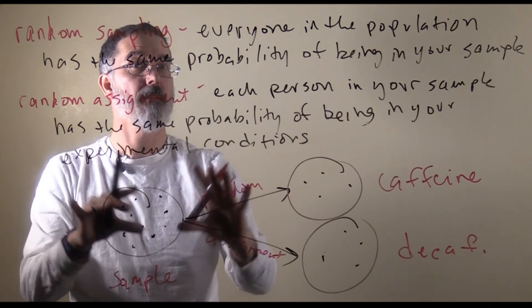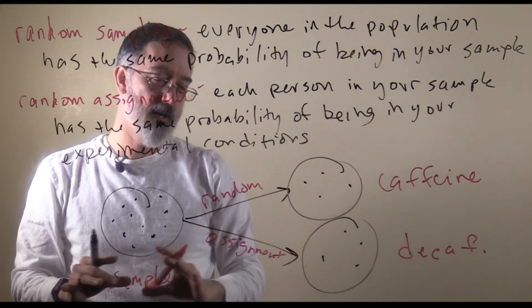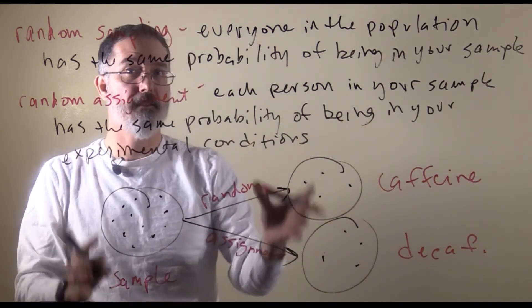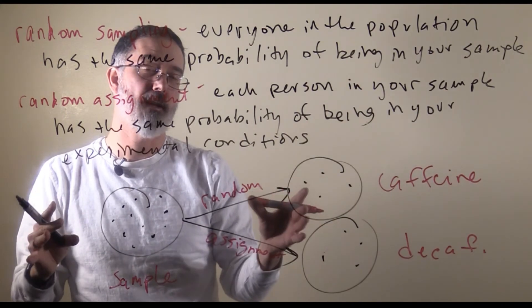for a causal claim. All the other kind of research that we do, we can't make strong causal claims. We can just say that two variables are associated with each other.